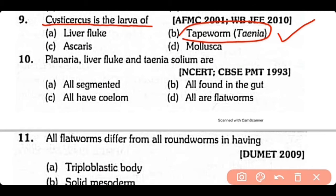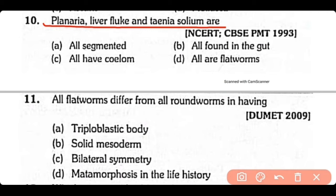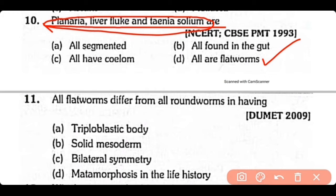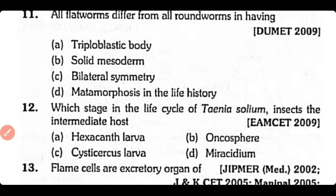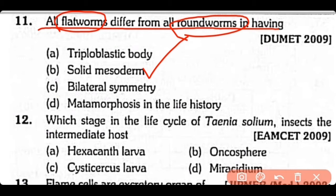Question no.10. The correct answer is option D. All flatworms differ from roundworms in having a triploblastic body, or they have solid mesoderm, in having bilateral symmetry, or metamorphosis in the life history. The correct answer is option B. Flatworms have solid mesoderm, meaning they are acoelomate, while roundworms have pseudocoelom.